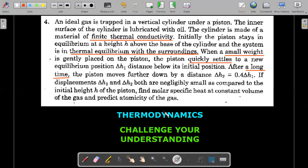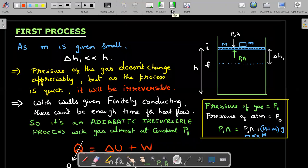If the displacements delta H1 and delta H2 are both negligibly small compared to the initial height of the piston, find the molar specific heat at constant volume of the gas and predict the atomicity of the gas. Pause and do it, then come back.